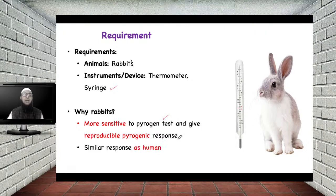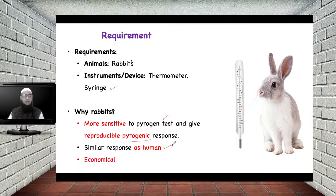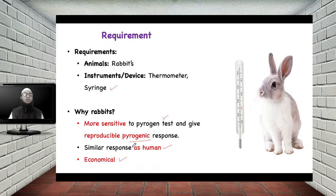Second, the rabbit has a similar pyrogenic response to humans — with reference to pyrogenic response, the rabbit behaves similarly to a human. Third, you only need three rabbits at the initial stage to conduct this test, so it is economical and not very expensive. Due to these three reasons, rabbits are the best experimental animal for conducting the pyrogen test.